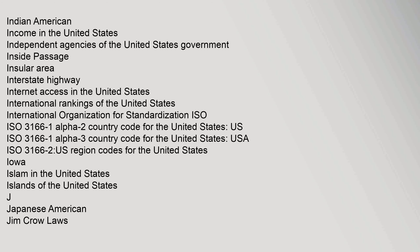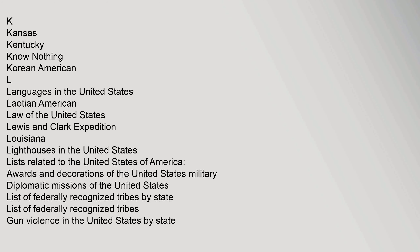J: Japanese American, Jim Crow Laws. K: Kansas, Kentucky, Know Nothing, Korean American. L: Languages in the United States, Laotian American, Law of the United States, Lewis and Clark Expedition, Louisiana, Lighthouses in the United States.